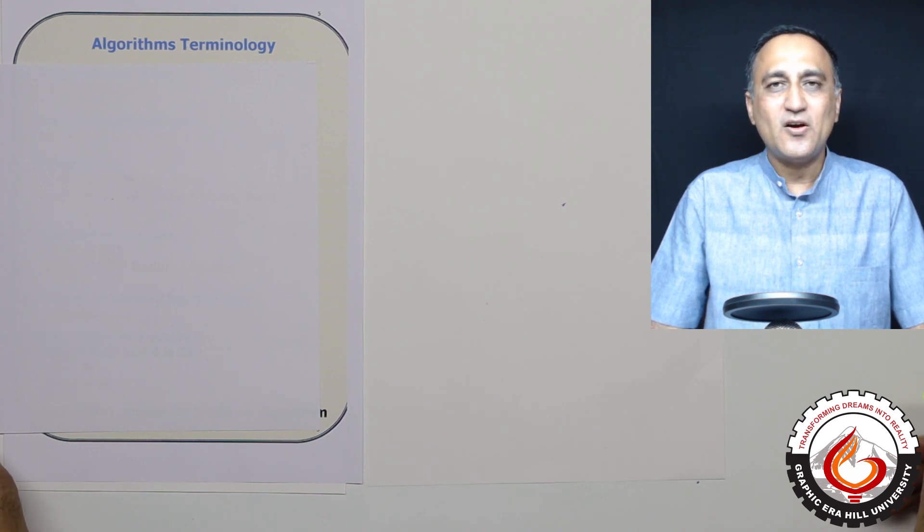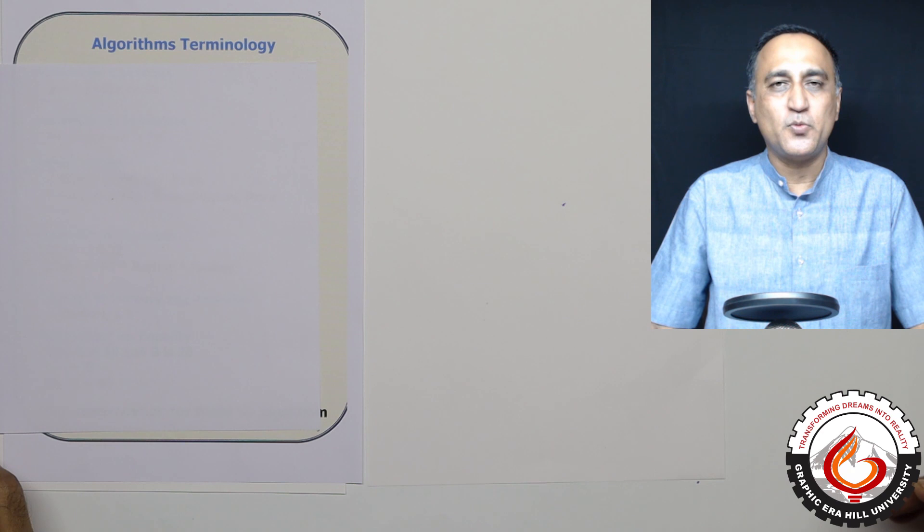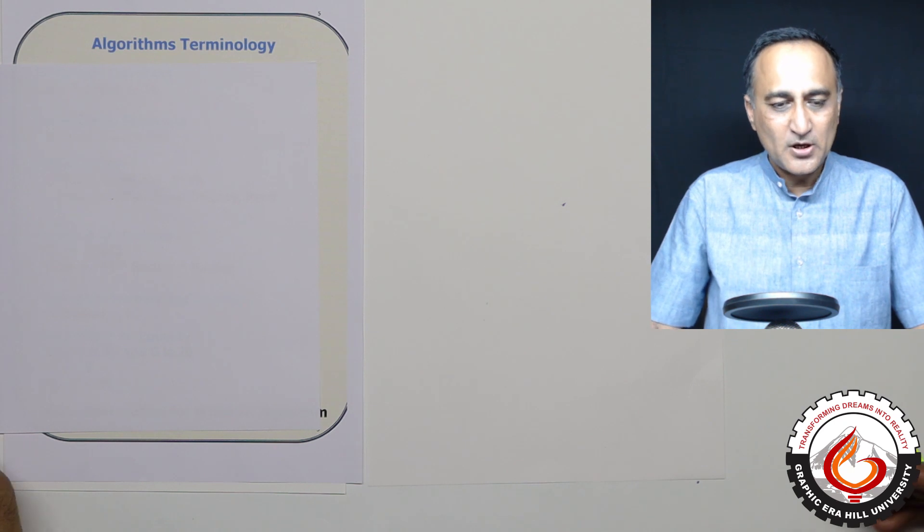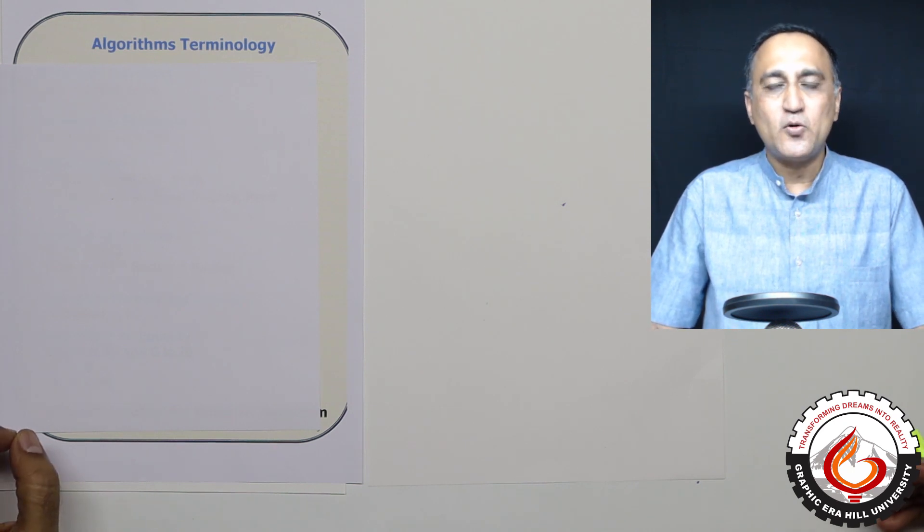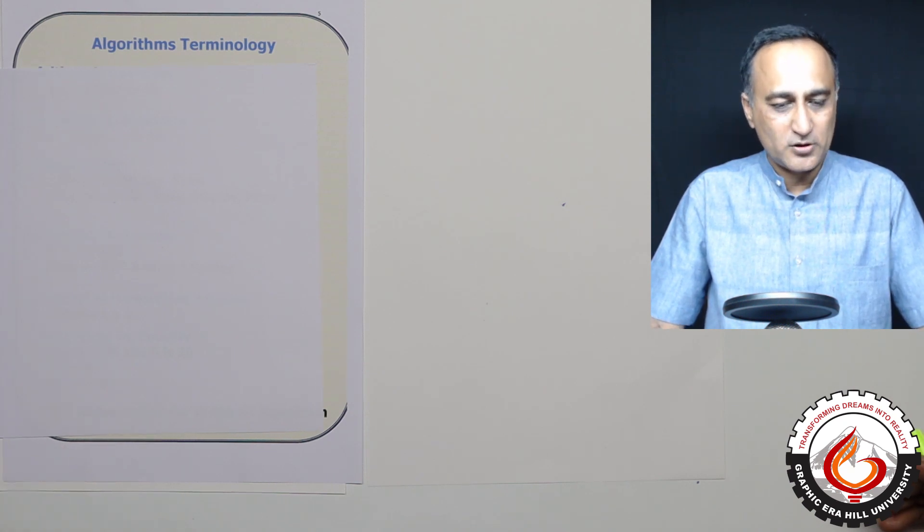Each author or textbook has its own way of doing things. But broadly, I have followed concepts which are used across or commonly used across most books, and which make the most sense and are easy to use and understand. In this session, I'll be talking about the commonly used symbols in algorithms, also known as the terminology of algorithms.